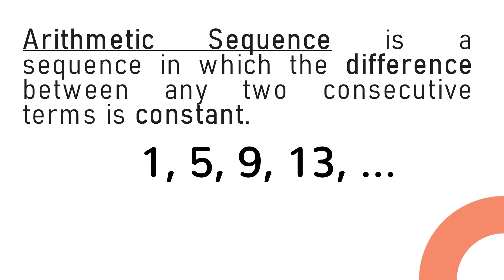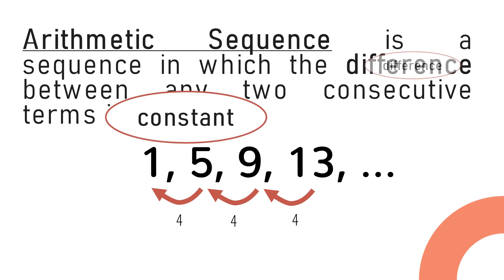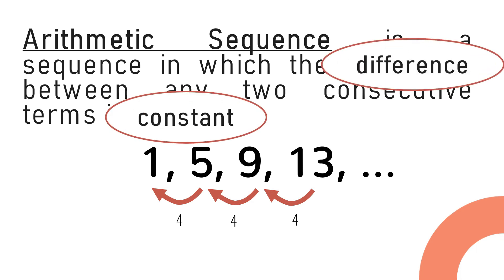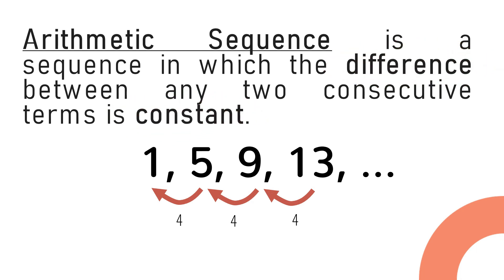Let's get the difference between the consecutive terms to test if there is a constant change in this sequence. The difference between 5 and 1 is 4, the difference between 9 and 5 is 4, and the difference between 13 and 9 is also 4. Meaning there is a constant difference, so the common difference for this sequence is equal to 4.